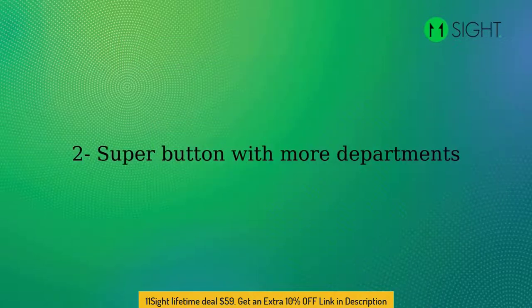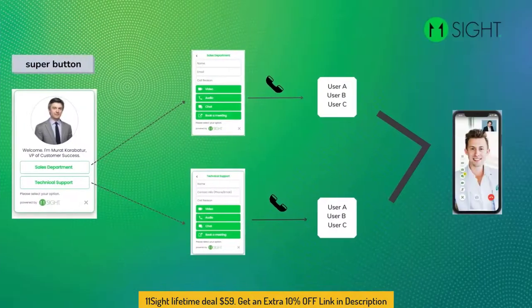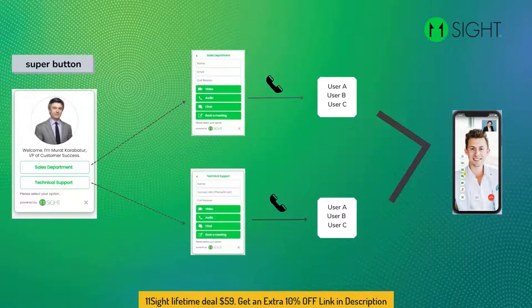Super Button with more departments: On the Super Button, you can display more than one department. First, the caller chooses the section, then the call type. All the users receive the call at the same time.